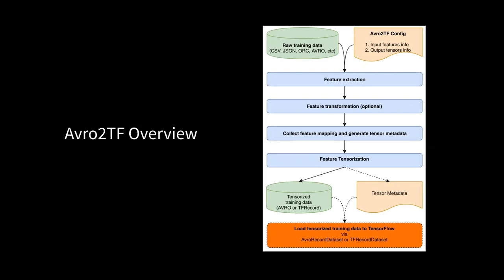After feature tensorization — converting string-based indices into numerical IDs — we have data directly readable by TensorFlow. For the open-source version, we recommend outputting data into TF record since TensorFlow has official support for loading TF record. Inside LinkedIn, we heavily rely on Avro, so our current default is Avro. Together with the converted training data, we output tensor metadata that sits alongside it. After you have these two pieces, you can directly load them into TensorFlow.